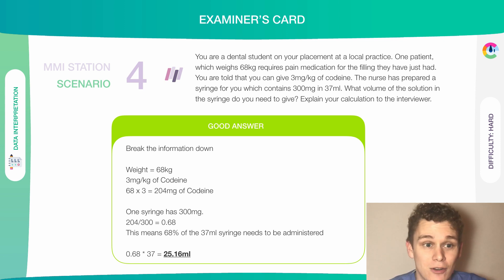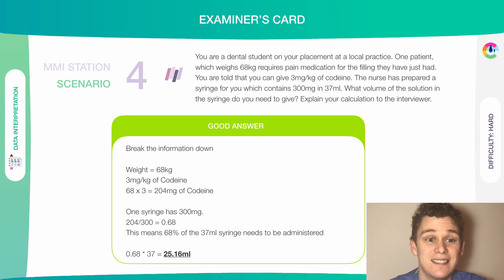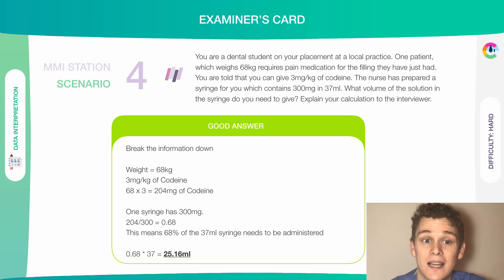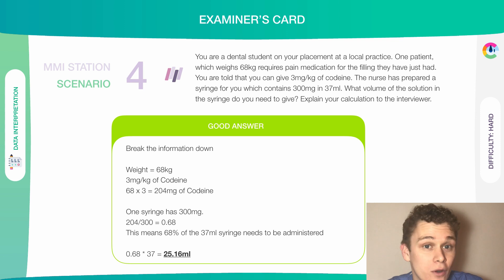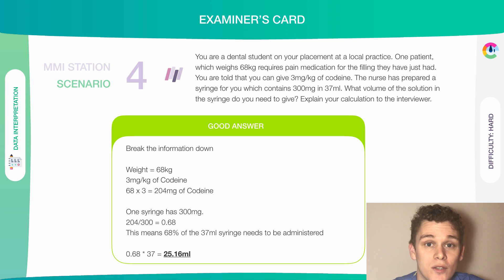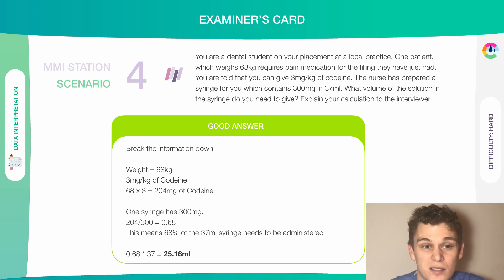First of all, you've got the weight: 68 kilograms. Then you've got 3 milligrams per kilogram of codeine, so that's 68 times 3, which gives you 204 milligrams of codeine. One syringe has 300 milligrams, so 204 over 300 gives you 0.68 — meaning 68% of the 37 ml syringe needs to be administered, which equates to 25.16 ml. Talk through it with the examiner clearly and concisely. Follow a structure and they might have some other questions for you.